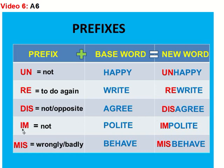We also have 'IM' — placed before the word 'polite,' you have 'impolite.' Then the last one: 'MIS,' spelled M-I-S, means wrongly or badly. The word is 'behave,' so we get 'misbehave.'